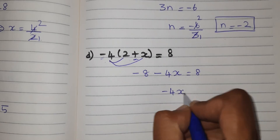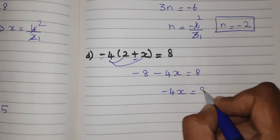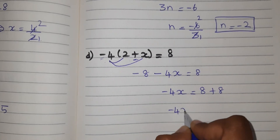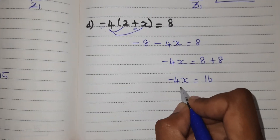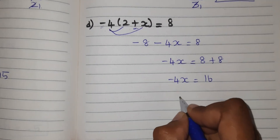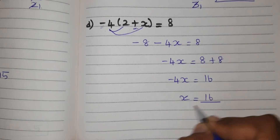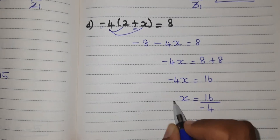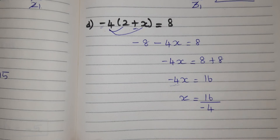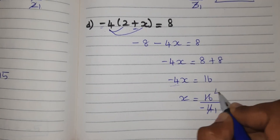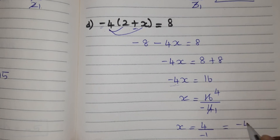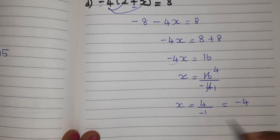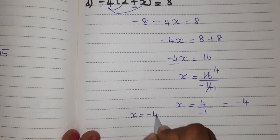By using the transposing method, minus 8 goes to the RHS side and becomes plus 8. So 8 plus 8 is 16. Now minus 4 into x is in multiplication. When multiplication goes to the other side, it will become division. So 16 divided by minus 4. The answer is x equal to minus 4.